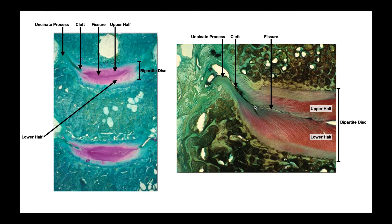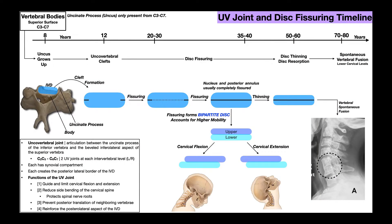The fissure eventually extends throughout the intervertebral disc from one side to the other. To summarize: the uncinate processes form by age 8, by age 12 they form the uncovertebral cleft, which then induces the start of fissuring. This fissuring process mostly begins around age 20 and occurs gradually over about two decades.